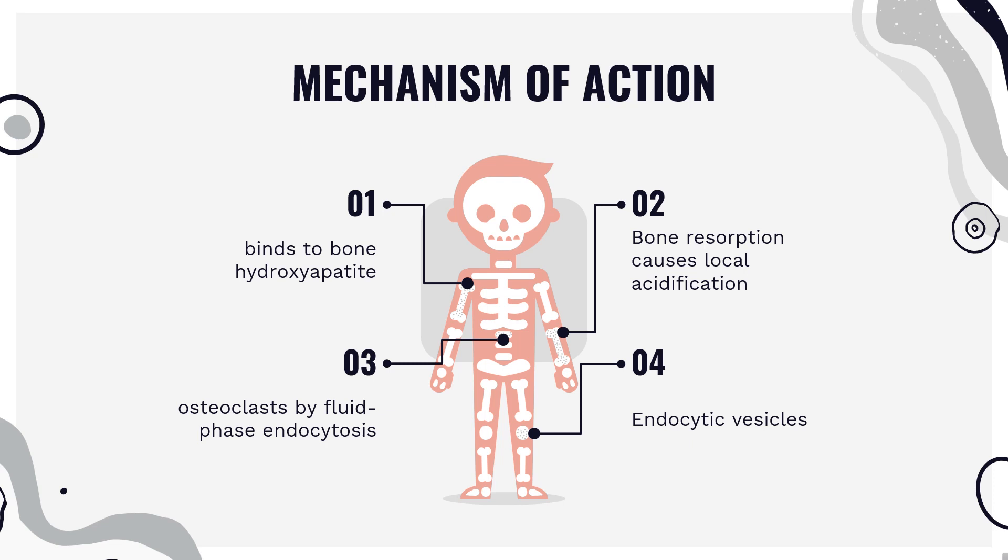Osteoclasts mediate resorption of bone. When osteoclasts bind to bone, they form podosomes, ring structures of F-actin. Zoledronic acid also inhibits V-ATPases in the osteoclast, though the exact subunits are unknown, preventing F-actin from forming podosomes. Disruption of the podosomes causes osteoclasts to detach from bones, preventing bone resorption.